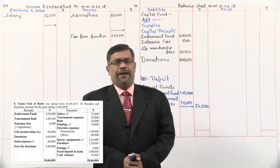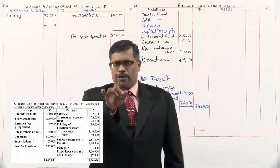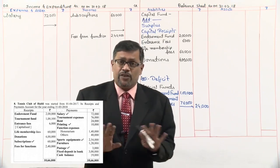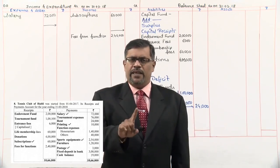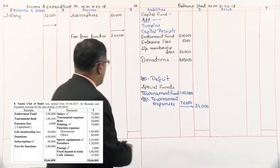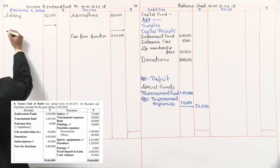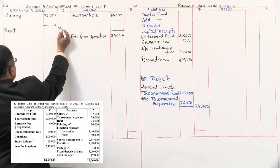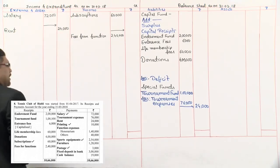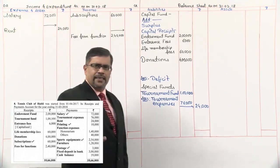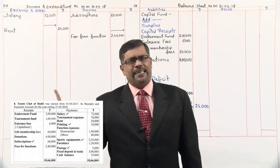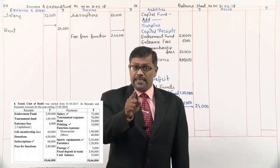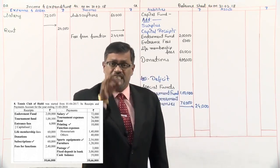The next item is rent — rupees 24,000. Rent is paid every month, so it is a recurring expense — revenue. We'll record it in the income and expenditure account. There is no tick mark on rent, which is why we take it directly in the outer column. Next, printing — 10,000. It has a tick mark, meaning there is an adjustment. We'll take it in the inner column and provide some space to do the adjustment.